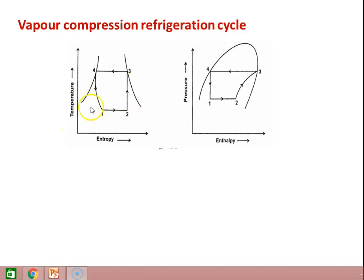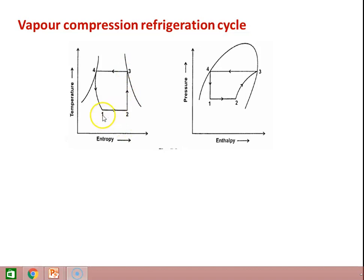On the pressure-entropy diagram: in process 1 to 2, pressure is constant; in 2 to 3, it is compression where pressure and enthalpy are increasing; in 3 to 4, pressure is again constant in the condenser; and 4 to 1 is a constant enthalpy process. Key relations: H4 = H1, S2 = S3, T1 = T2, T3 = T4, P4 = P3, and P1 = P2.